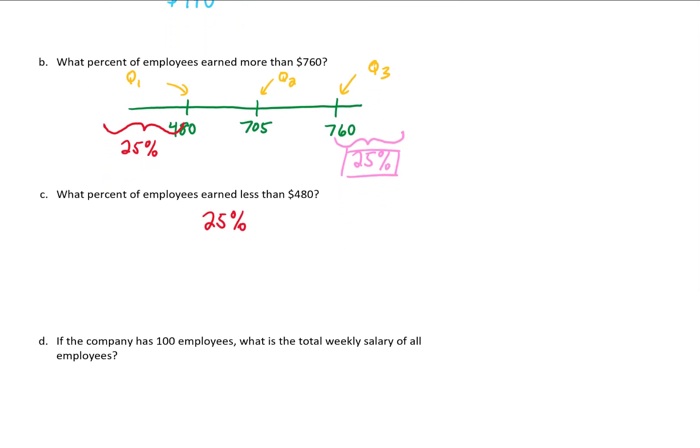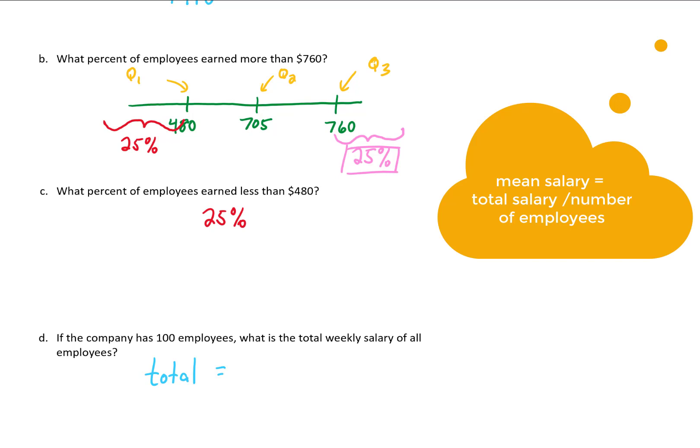But moving on to the next question. If the company has 100 employees, what is the total weekly salary for all of the employees? Well, if we want the total salary for all 100 employees, we can take the mean, or the average salary, and multiply that by the total number of employees.